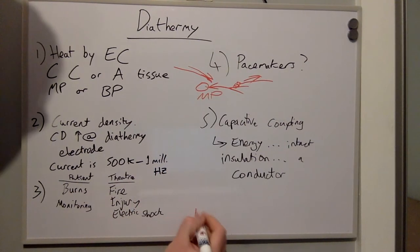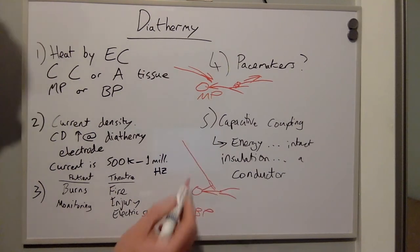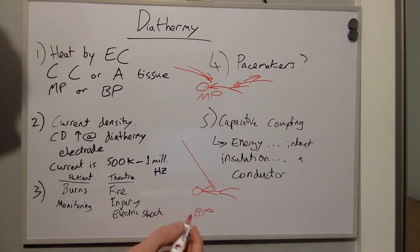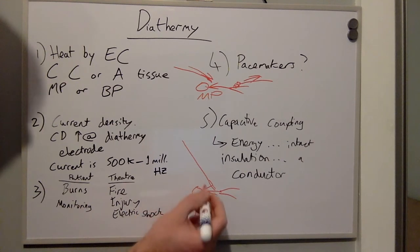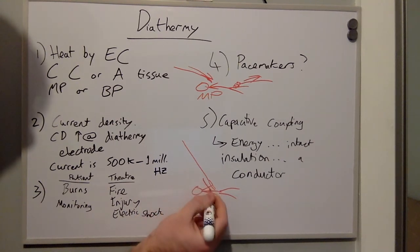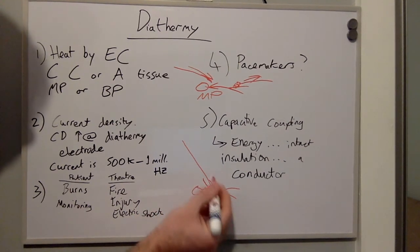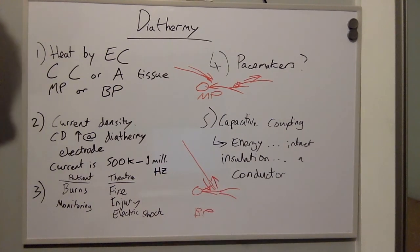With bipolar diathermy, the tip of the diathermy is used to complete the circuit. So the current that flows to the patient and the current that flows away from the patient is all done through the diathermy tip.